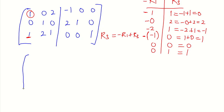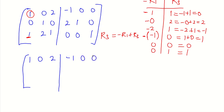Since the effect does not happen in row 1 and row 2, we maintain their values. Row 1: 1, 0, 2, minus 1, 0, 0. Row 2: 0, 1, 0, 2, 1, 0. New row 3: 0, 2, minus 1, 1, 0, 1.